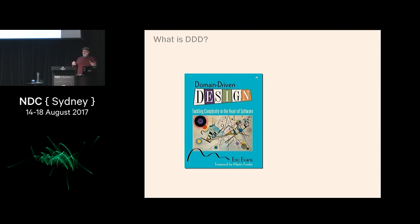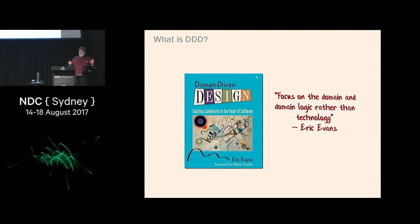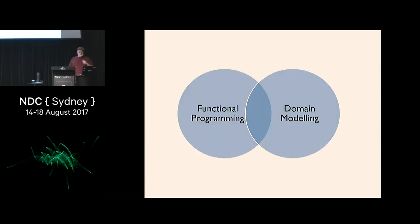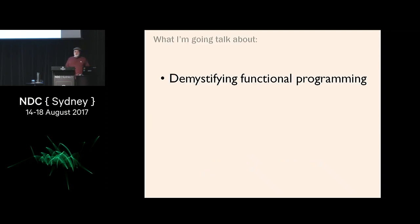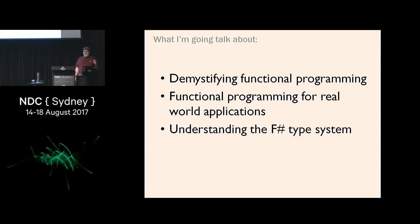This talk is a mix of different topics: domain-driven design, which was originally a book by Eric Evans, and functional programming. Domain-driven design is about understanding the system from the user's point of view, not from a technical point of view — focus on the business logic rather than the technology. This talk is about the intersection of domain modeling, which is typically considered an object-oriented thing, and functional programming. I actually think they go together really well. First I'll demystify functional programming, then talk about why it's good for real-world applications, then the F# type system and how it's different from an object-oriented type system, and finally how to model that simple contact type using types alone.